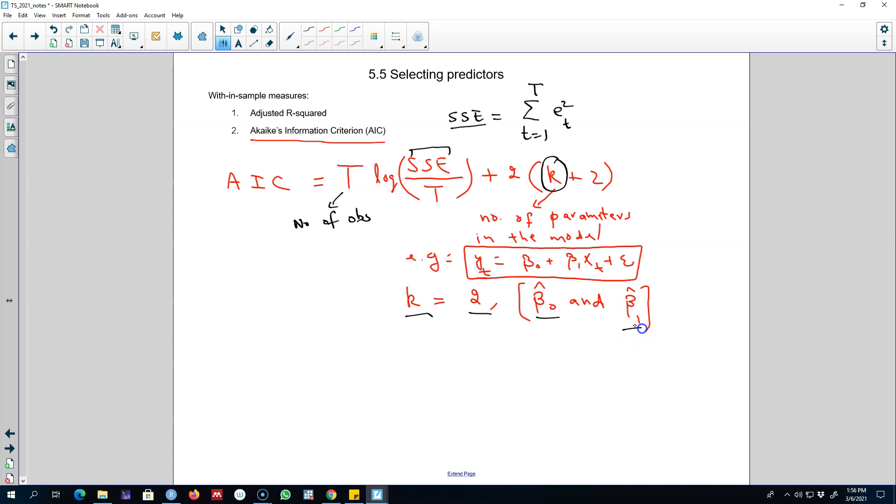Since AIC is based on these residuals, we want to minimize errors in our regression model—that is, we want our predictions to be as close to our observed values as possible. Since the information criterion is based on these errors, we want to minimize AIC. If we have multiple models, we will choose the model with minimum AIC. This is the second criterion we can use to choose predictors.